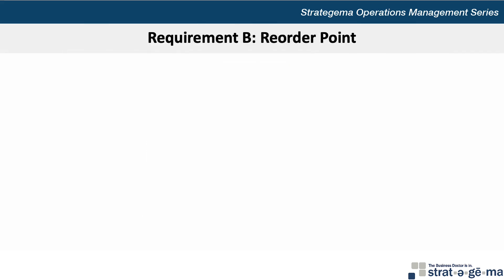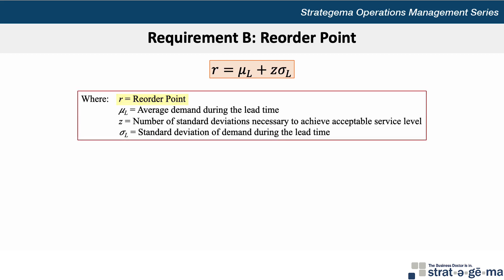For requirement B to calculate the reorder point, we want to use the formula R equals mu L plus Z times sigma L, where R equals the reorder point, mu L equals the average demand during the lead time, Z equals the number of standard deviations necessary to achieve an acceptable service level, and sigma L is the standard deviation of the demand during the lead time.